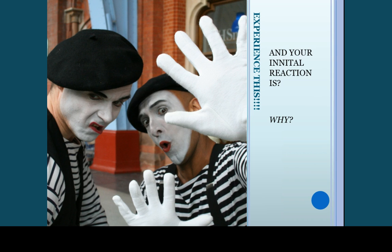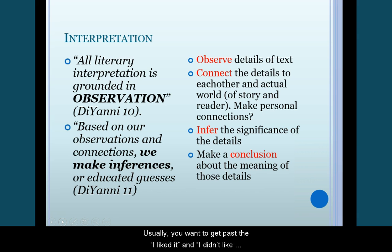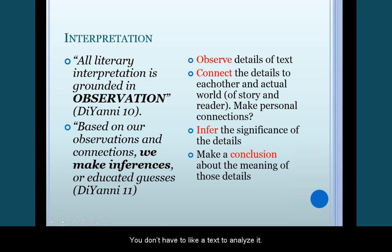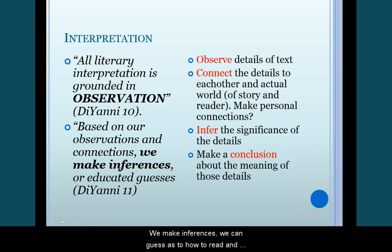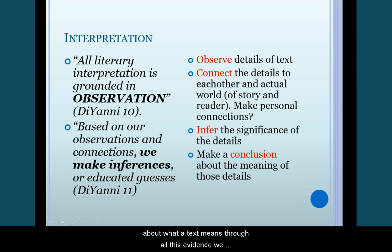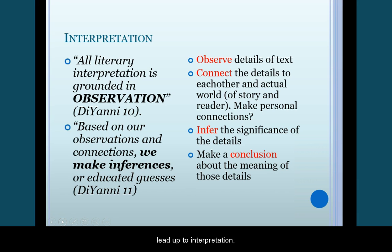Interpretation. Usually, you want to get past the 'I liked it' and 'I didn't like it' phase, and get to something more analytical. You don't have to like a text to analyze it. We observe a text or read it carefully, noticing details. Then we make personal connections. It is important to remember that not all of these connections are dependent on familiarity. We make inferences — we can guess as to how to read and interpret a text. Then we make a conclusion about what a text means through all the evidence we collect. These are all steps that lead up to interpretation.